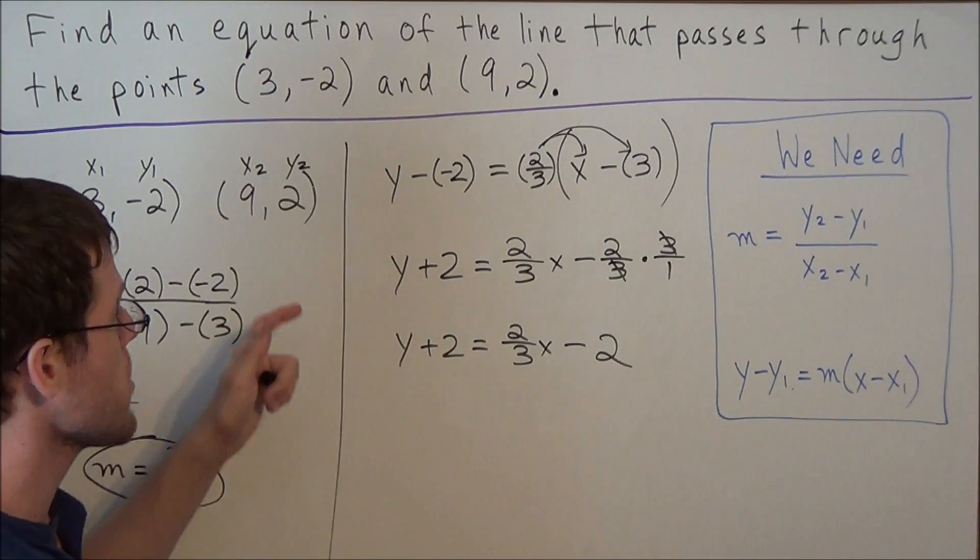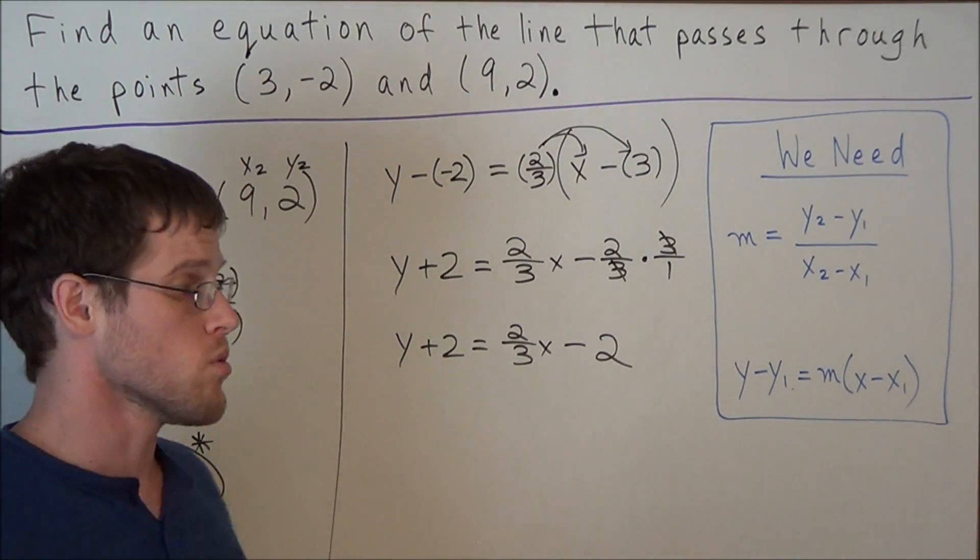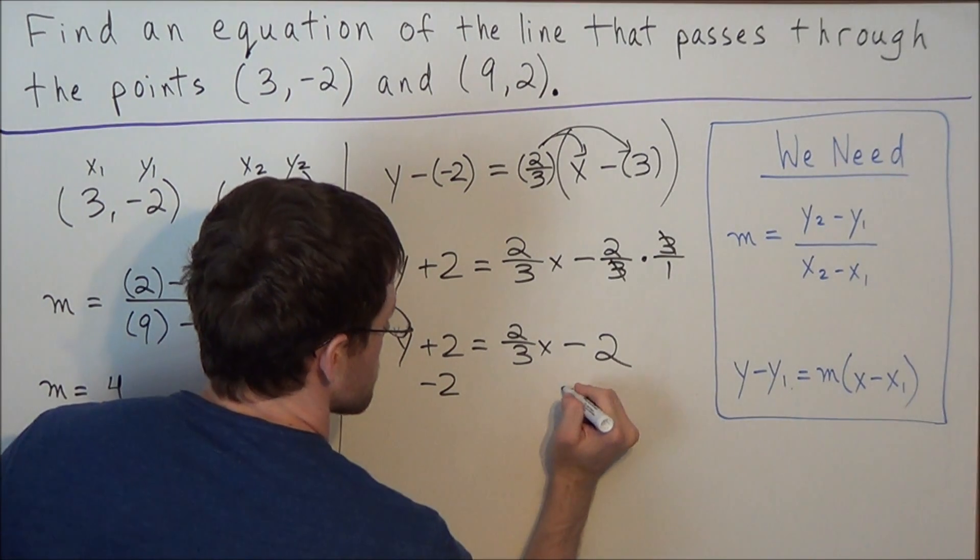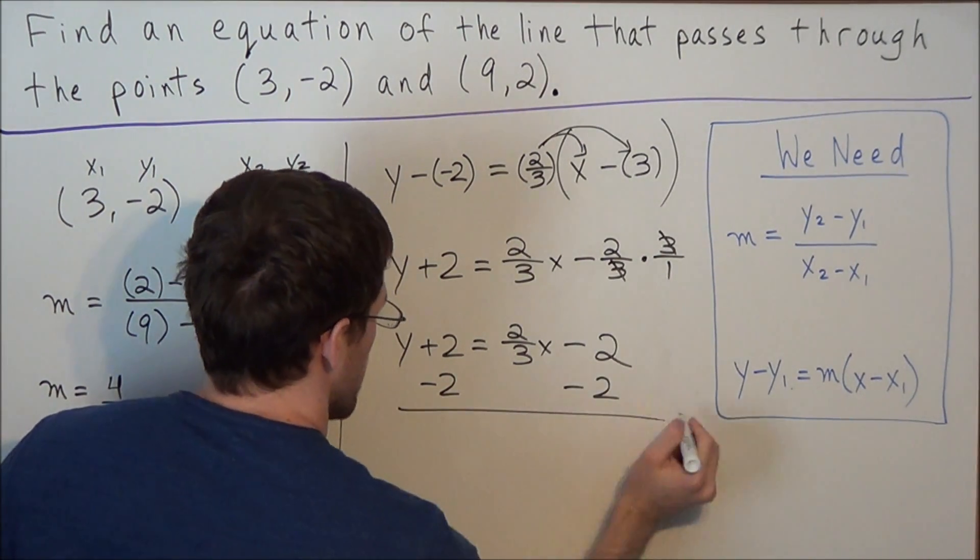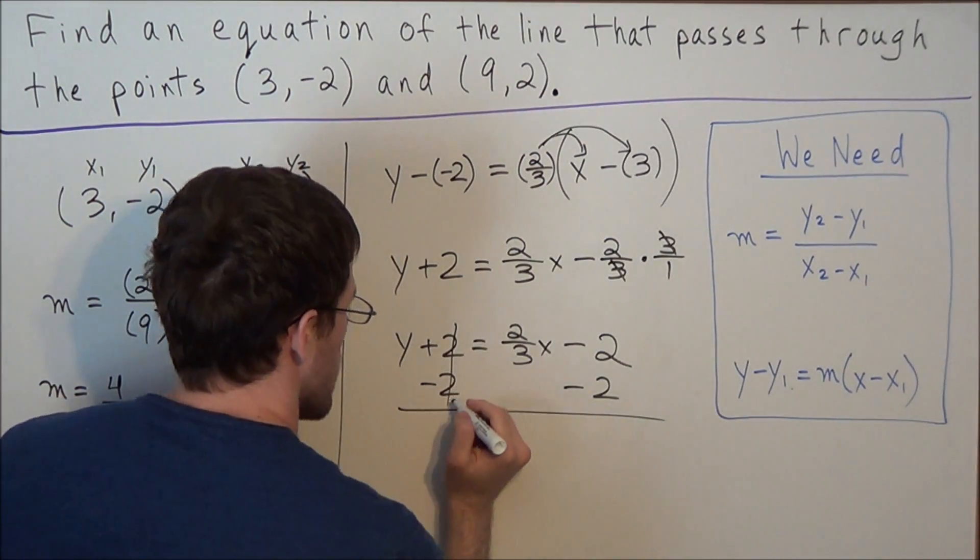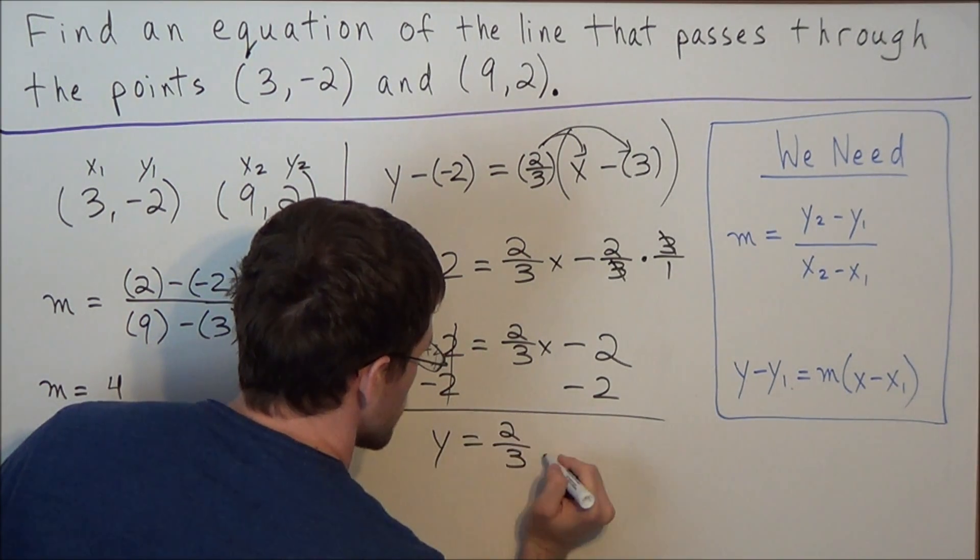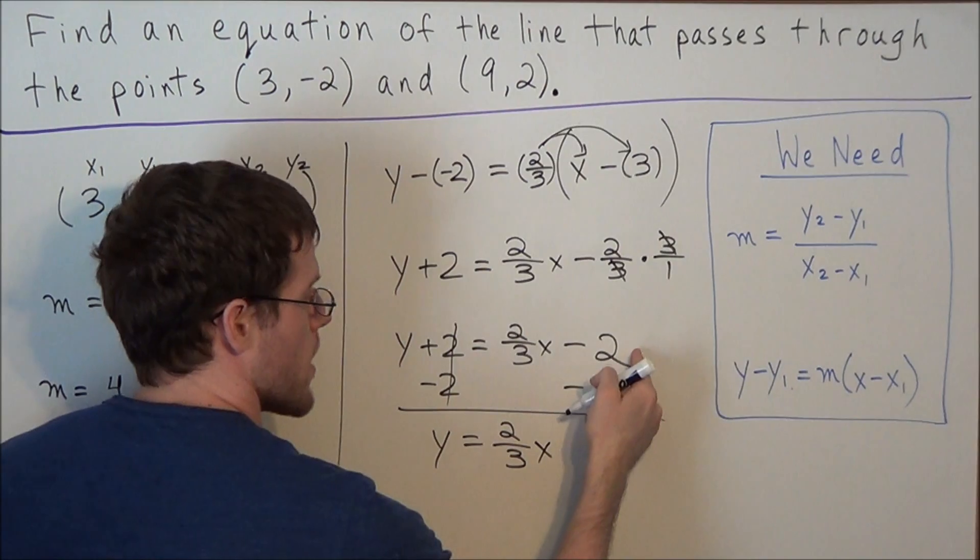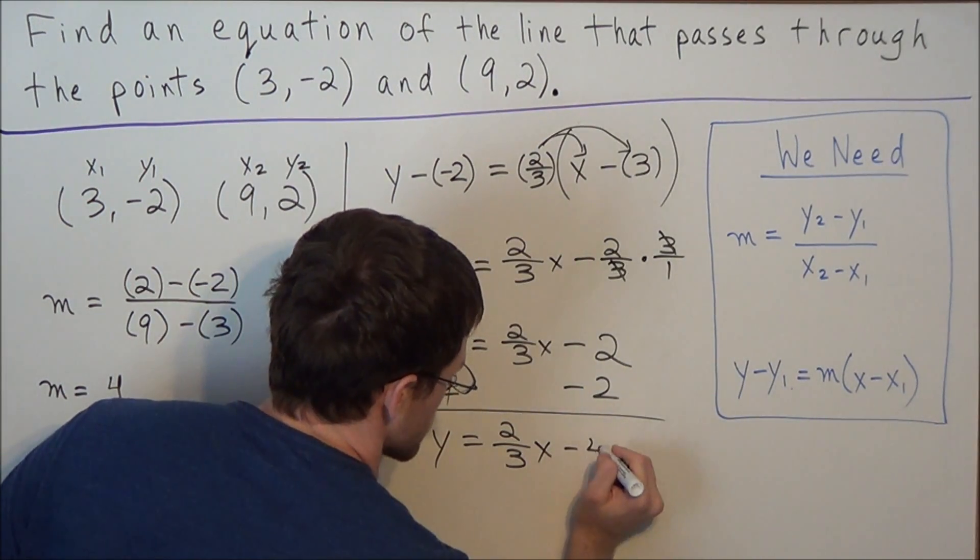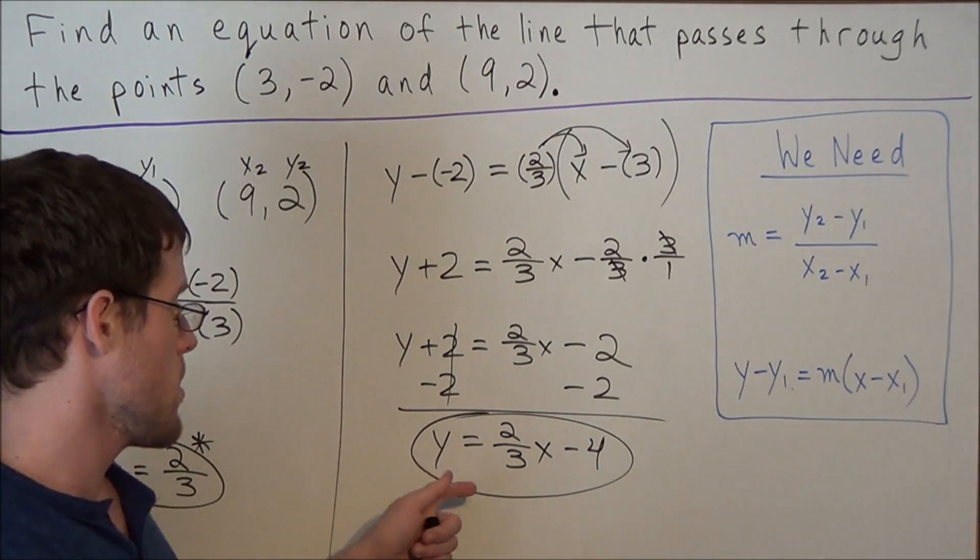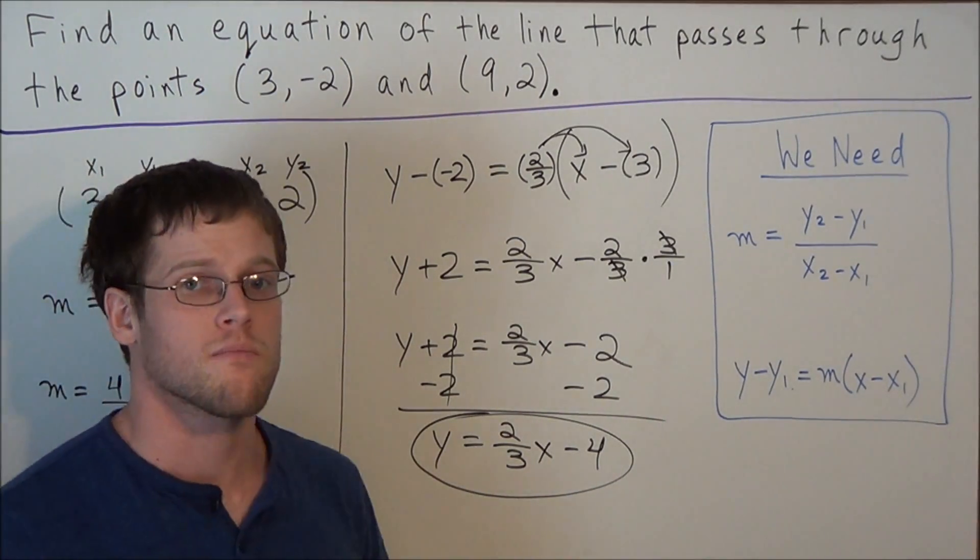So now our goal is to write an equation of a line in the form y equals. So what we're going to do is we're going to subtract 2 from both sides. So now 2 minus 2 will cancel, and we have y equals 2 over 3 times x, and now negative 2 minus 2 is a negative 4. So our equation is y equals 2 thirds x minus 4.